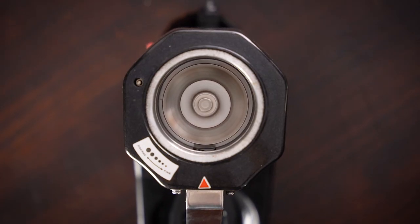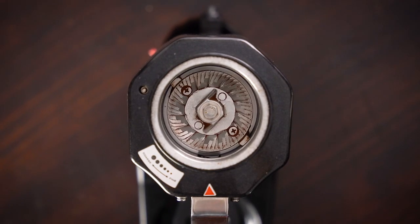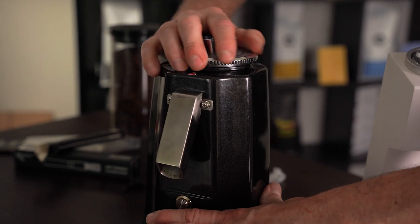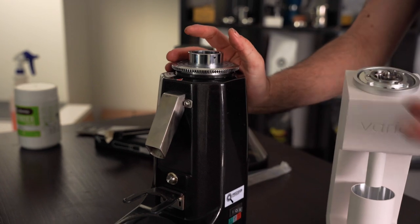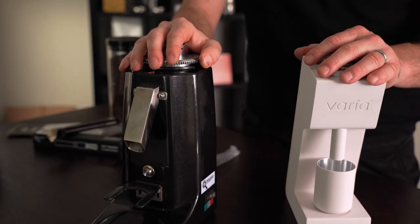Now they're spinning freely. Okay, so that's about where I want to be. So the way to do that is get the burrs to touch and then back it off about two centimeters. And that's a good starting point. So that's just some general maintenance on your grinder at home.